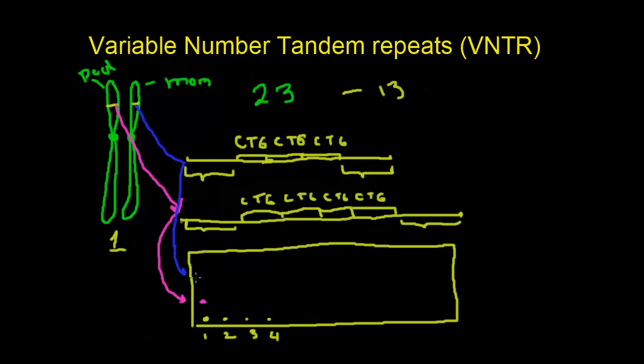The same idea applies to all the rest of the chromosomes, so we can get a unique pattern for each chromosome. Such a pattern is unique for each person, just like fingerprints, and it's also called DNA fingerprinting.